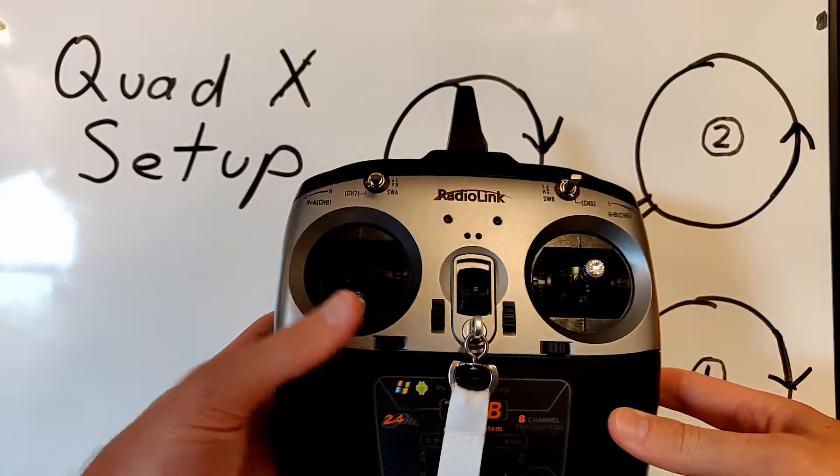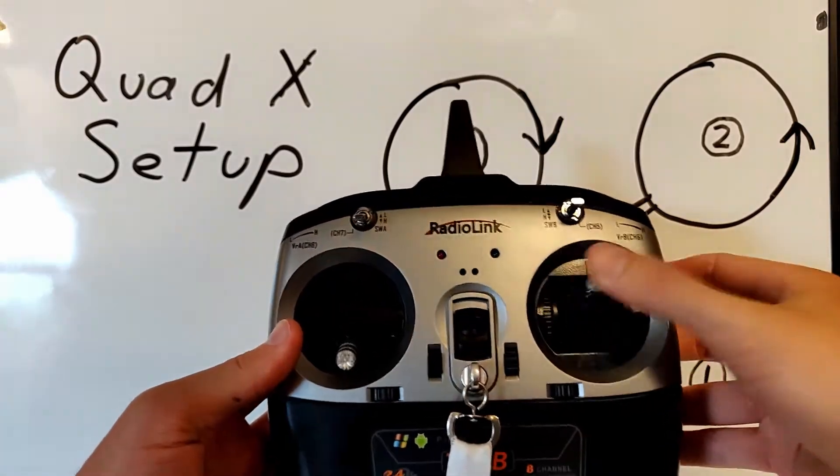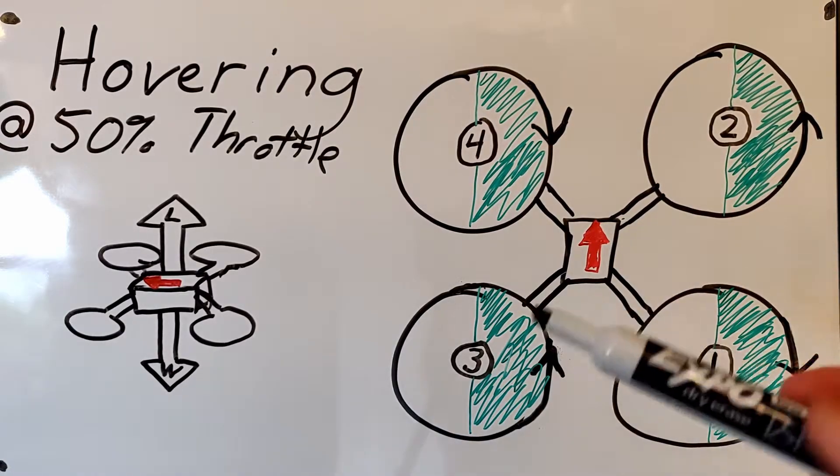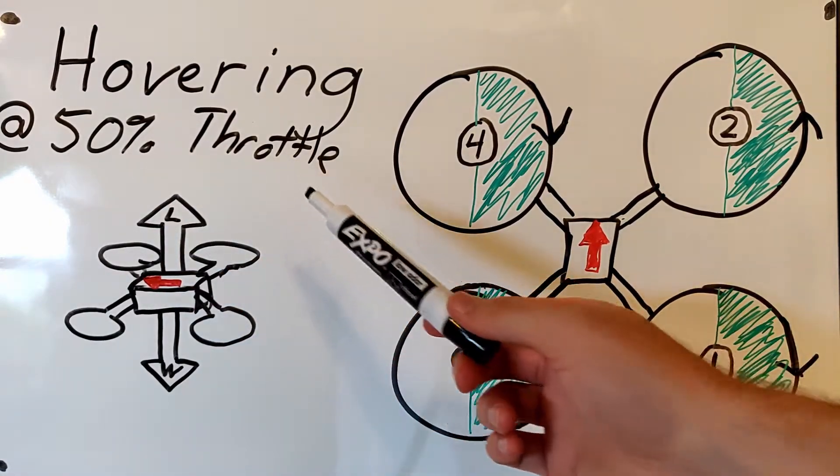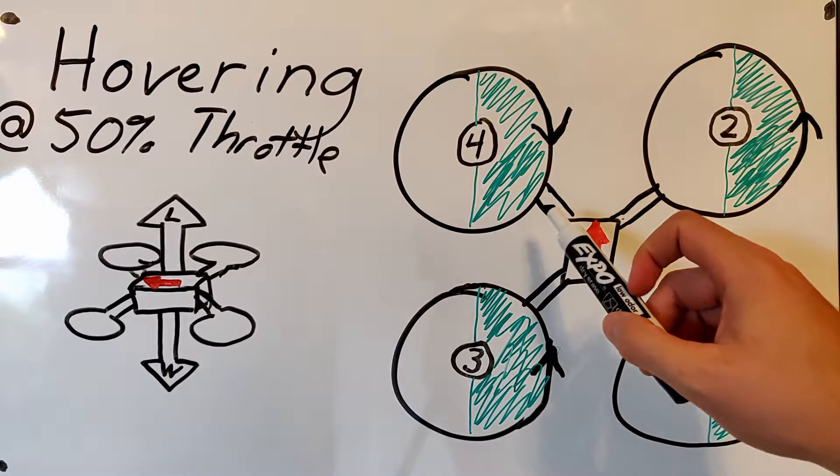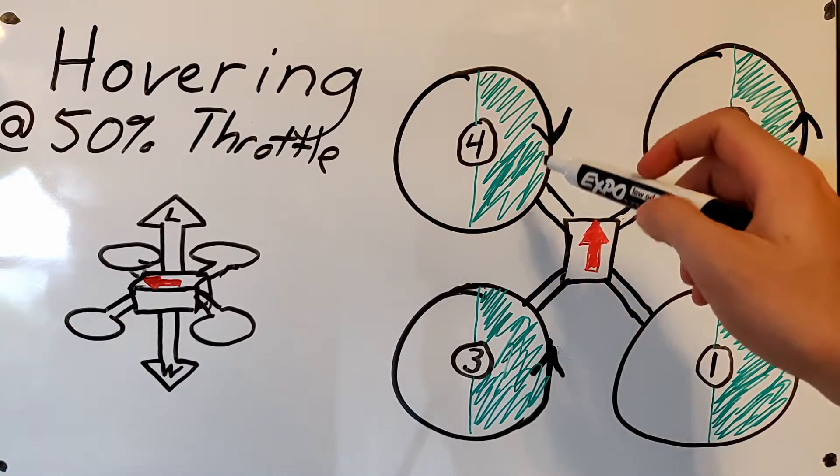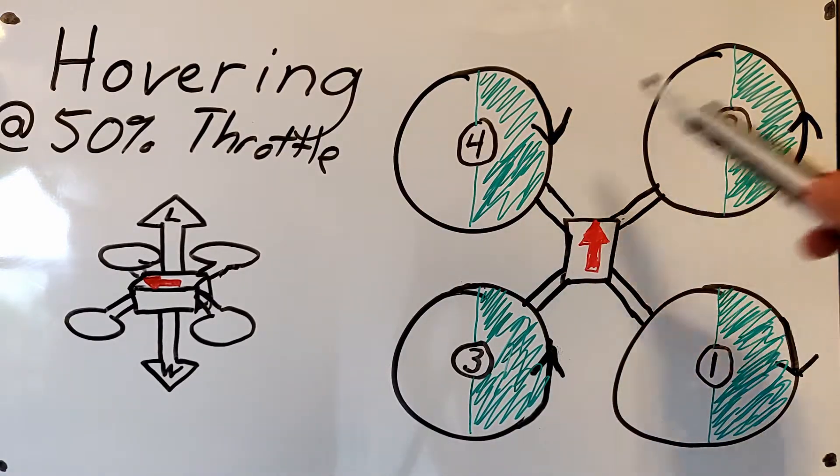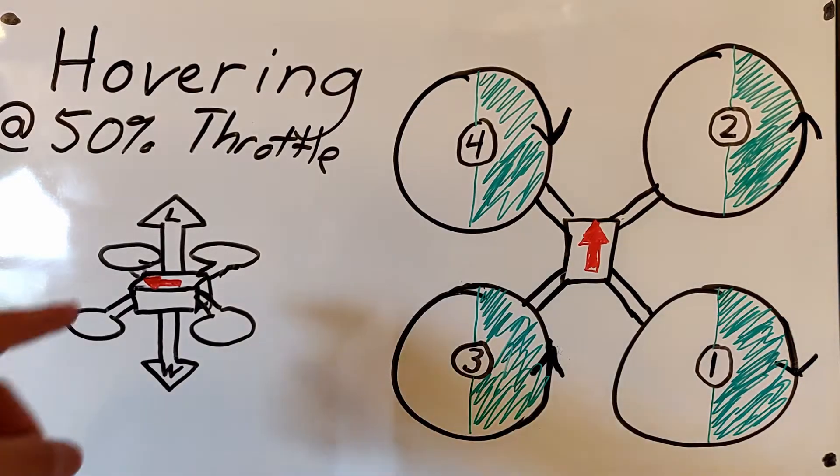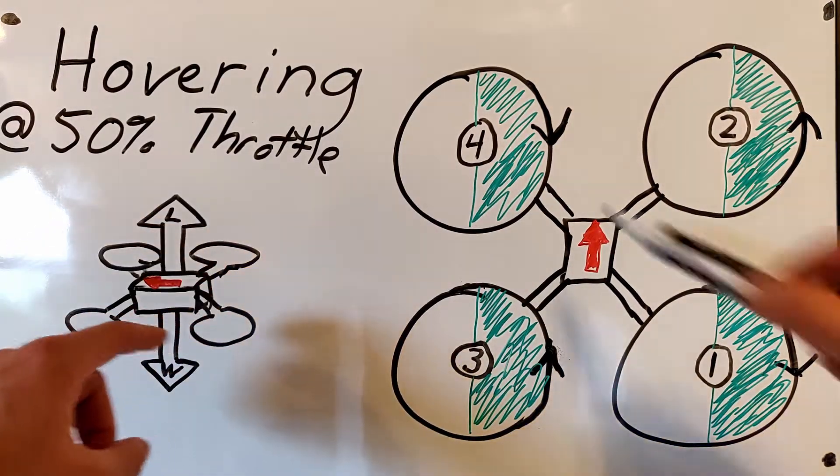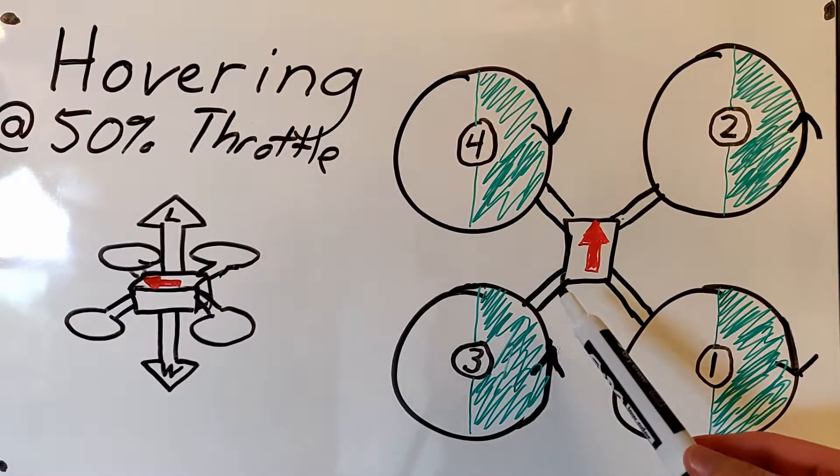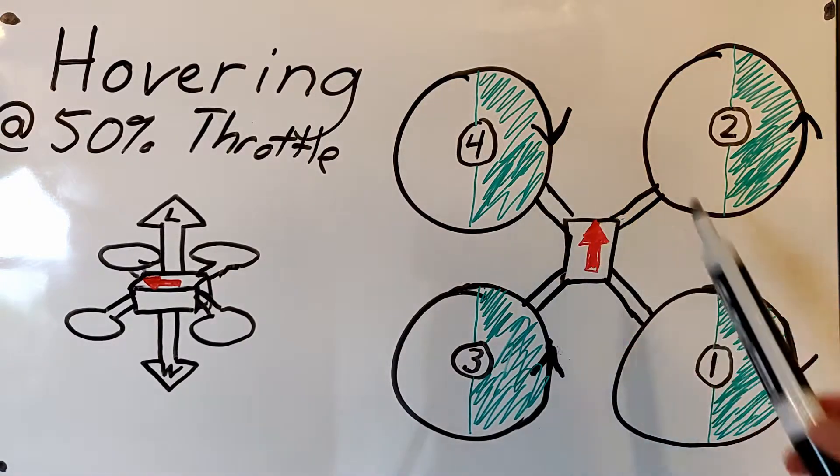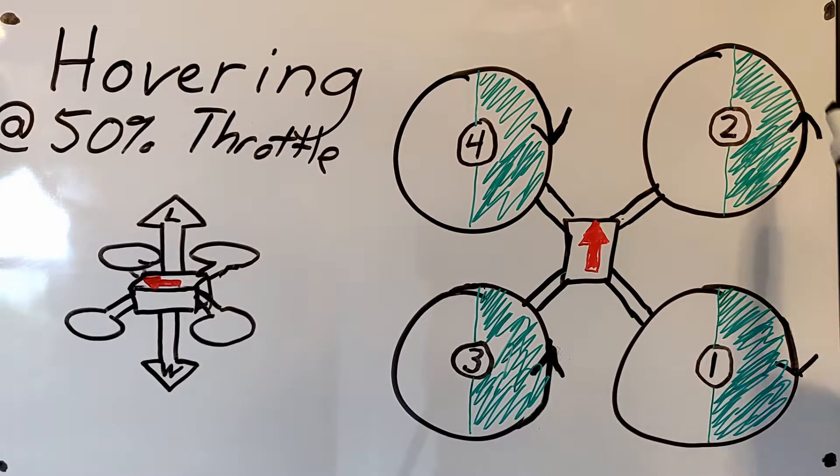Also note that the radio we're using is going to be a mode two radio. The first move we'll talk about is hovering. Hovering means it's staying in the same place in the air. And we're going to assume that at a 50% throttle that our craft will be hovering. The amount of RPMs that each of the propellers is getting is going to be denoted by the fraction of the circle that's filled in with green. Each of the four motors are at 50% RPM. The total lift generated by all four propellers is equal to the amount of weight of the copter. The quadcopter will also not be rotating in any direction because the two clockwise motors are going the same speed as the two counterclockwise motors canceling out the torques.